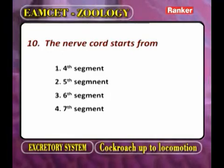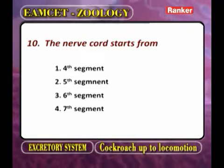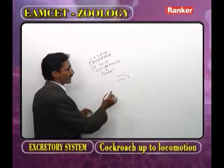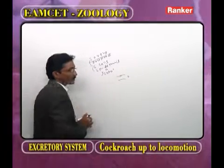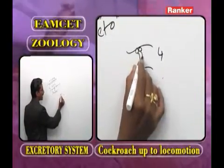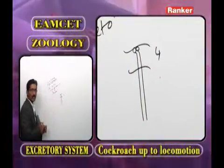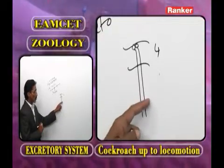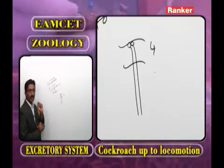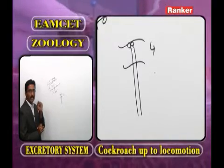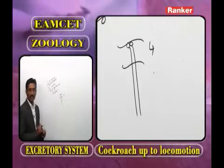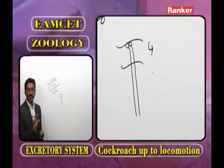The nerve cord starts from which segment? In the fourth segment, sub-pharyngeal ganglia are present. From these sub-pharyngeal ganglia, the nerve cord starts. So the nerve cord starts from the fourth segment. The answer is the fourth segment.